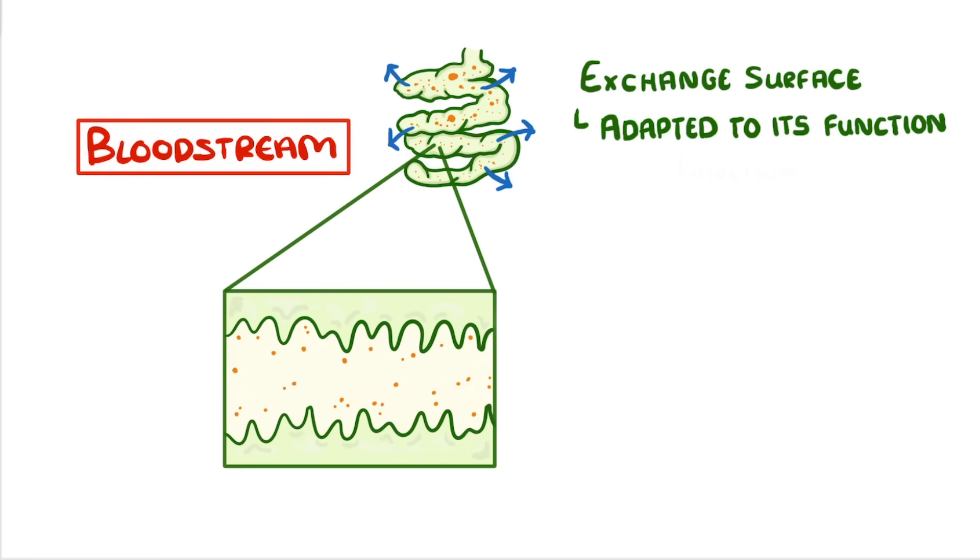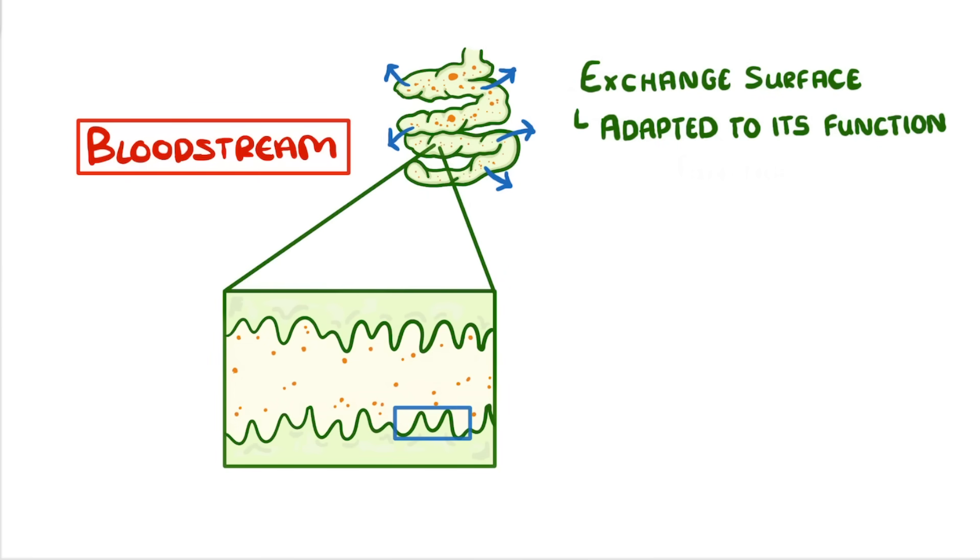If we take a closer look at the inside lining of the small intestine, we see that there are loads of these little finger-like projections, which are called villi. These massively increase the surface area of the small intestine, which means that digested food can be absorbed into the bloodstream much more quickly.